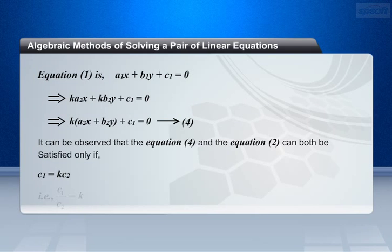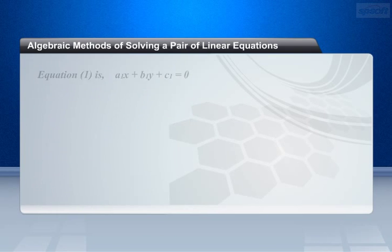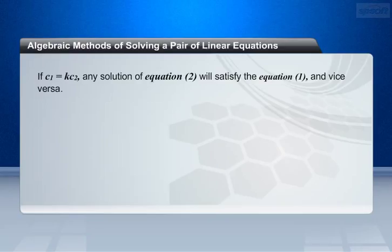That is, c1 by c2 equals k. If c1 equals k c2, any solution of equation 2, that is a2 x plus b2 y plus c2 equals 0, will satisfy equation 1, a1 x plus b1 y plus c1 equals 0, and vice versa.